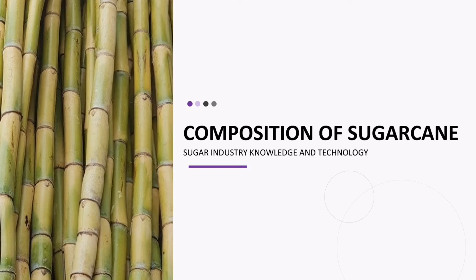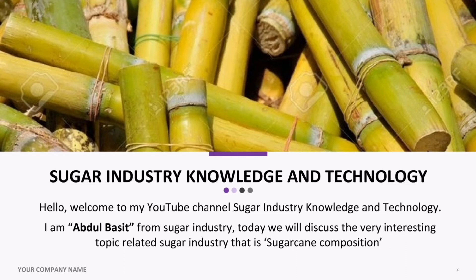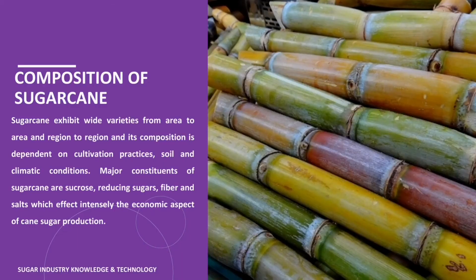Welcome to Sugar Industry Knowledge and Technology. I am Abdul Bassett. Today we will discuss a very interesting topic related to the sugar industry — that is sugarcane composition. Sugarcane exhibits wide varieties from area to area and region to region, and its composition is dependent on cultivation practices, soil, and climatic conditions. Major constituents of sugarcane are sucrose, reducing sugars, fiber, and salts, which intensely affect the economic aspect of cane sugar production.